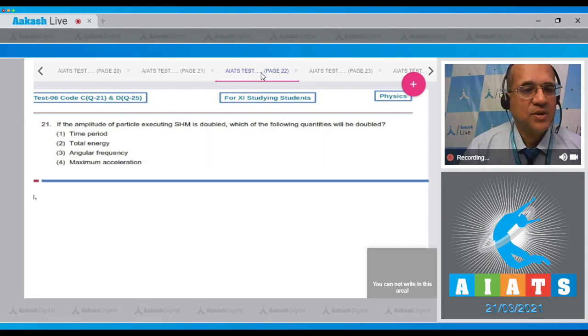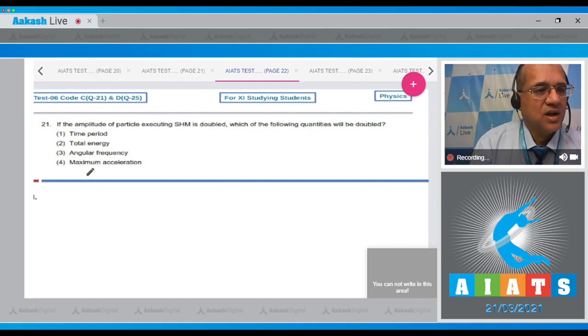Question number 21: If the amplitude of a particle executing SHM is doubled, which of the following quantities will be doubled? The first option is time period. Amplitude is doubled, so a is changed to 2a.